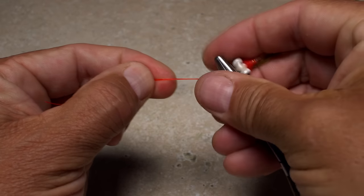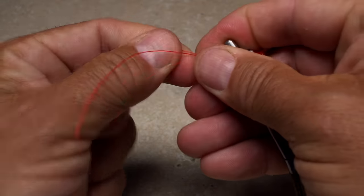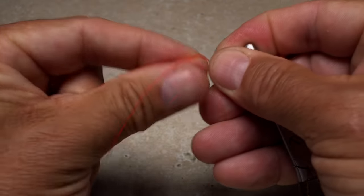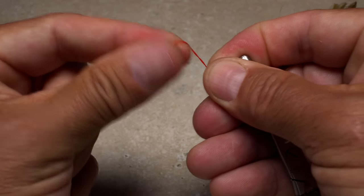Pinch the tag end and the running line with the fingertips of your right hand and begin twisting the tag around the running line anywhere from five to seven times.